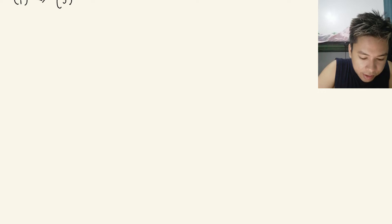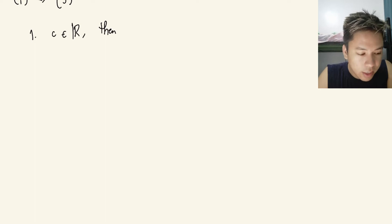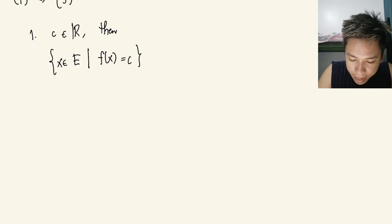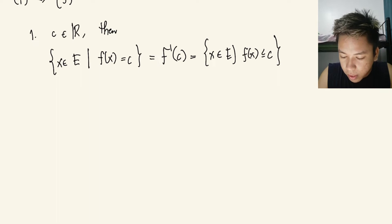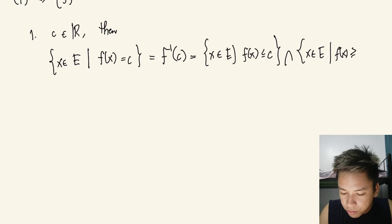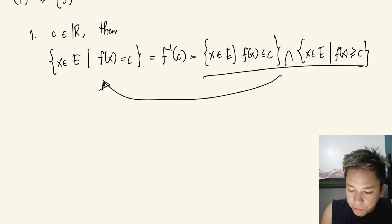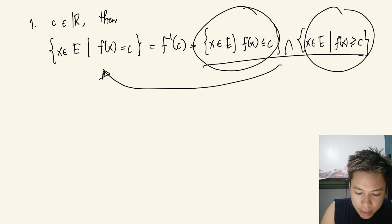We will have three different cases. Case 1: if c is an element of ℝ, then f⁻¹(c) — the set {x∈e : f(x)=c} — is equivalent to {x∈e : f(x) ≤ c} ∩ {x∈e : f(x) ≥ c}. Both sets are measurable, implying that f⁻¹(c) is measurable.